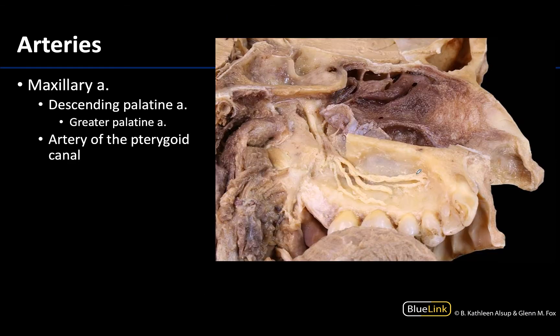All the rest of the arteries that we will discuss are branches of the third part of the maxillary artery. Now in this particular image, this is a particularly deep dissection — you do see a bit of the hard palate right here. A lot of the soft palate and the muscles in this region have been removed in order to better see the contents of the pterygopalatine fossa as well as the greater palatine canal.